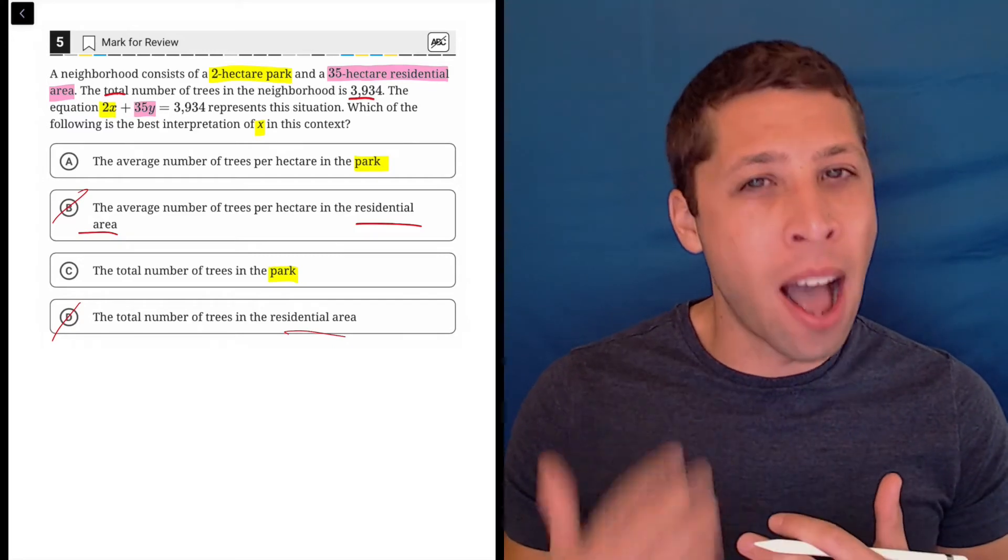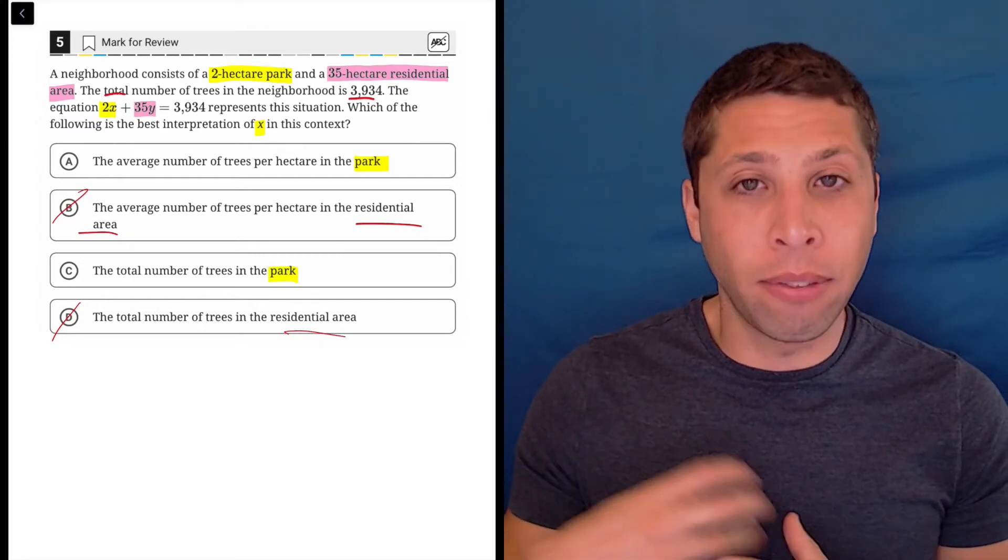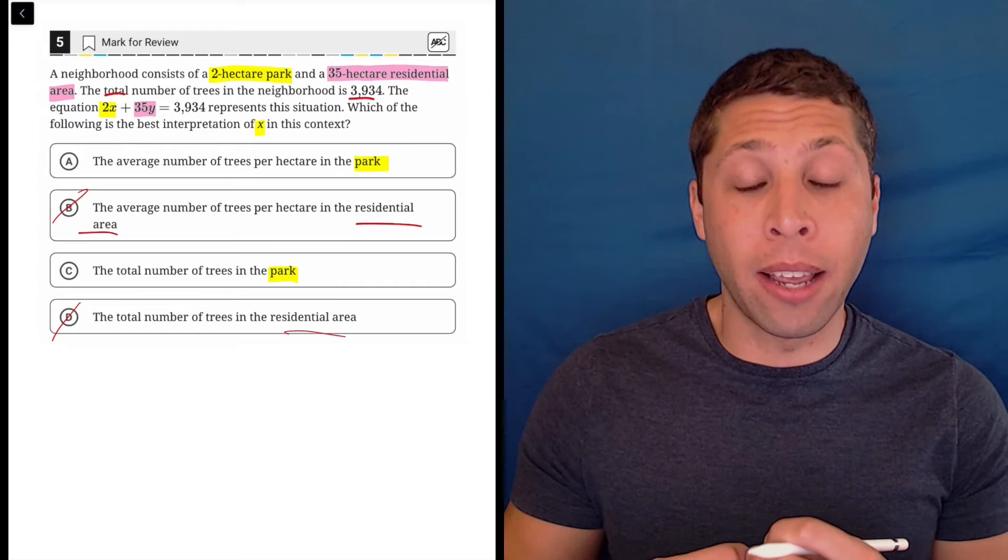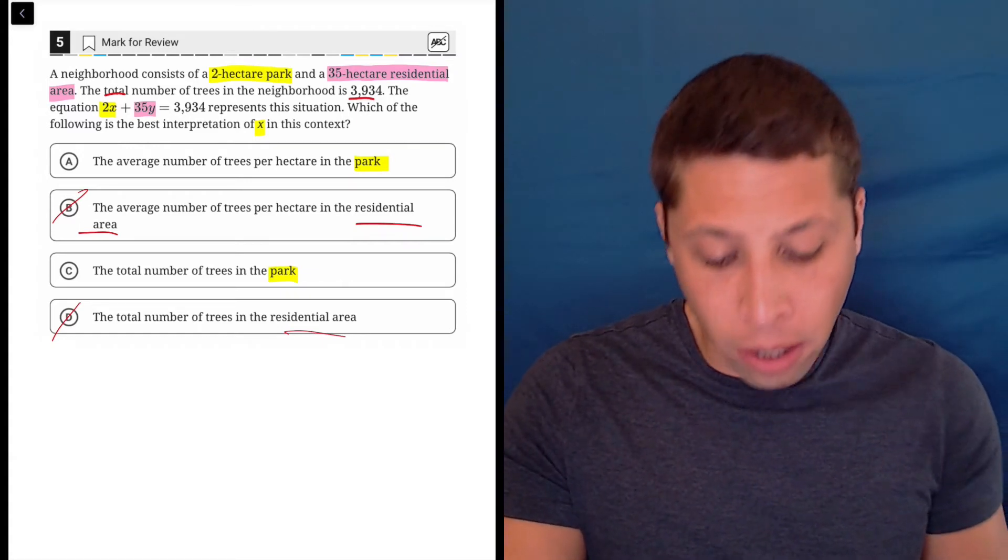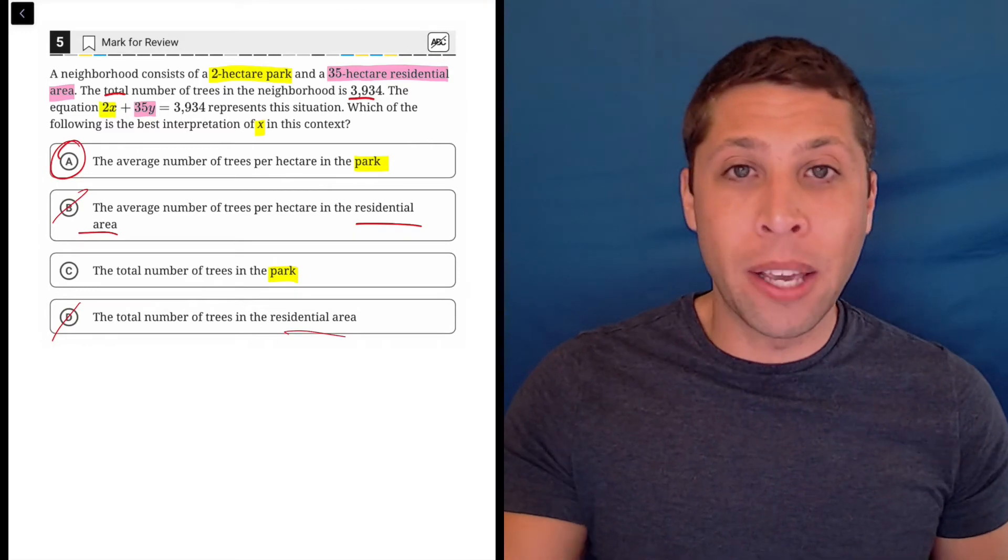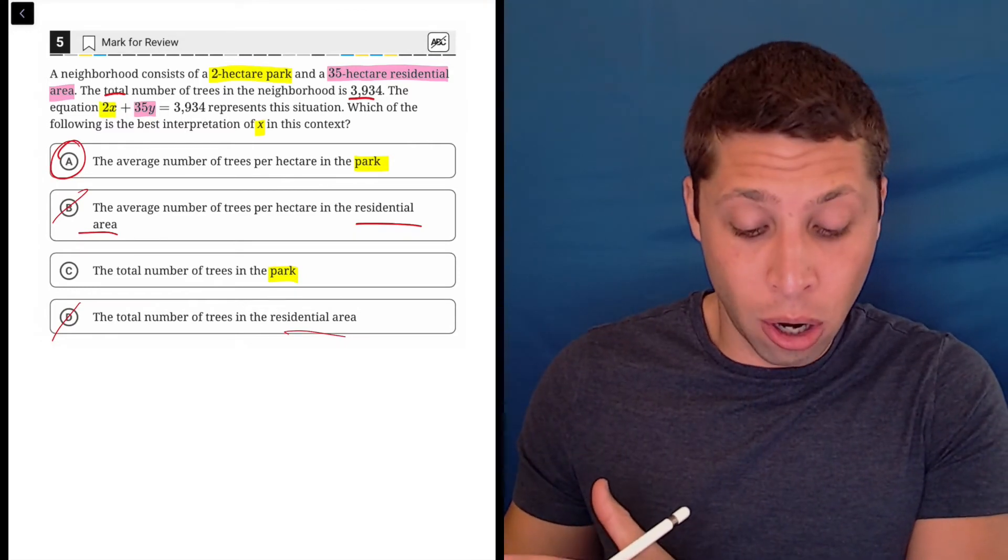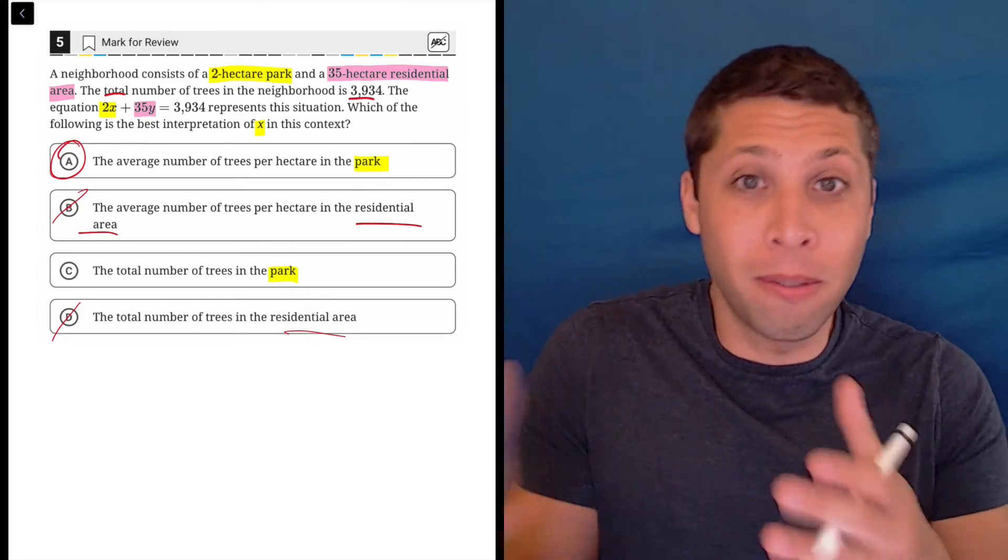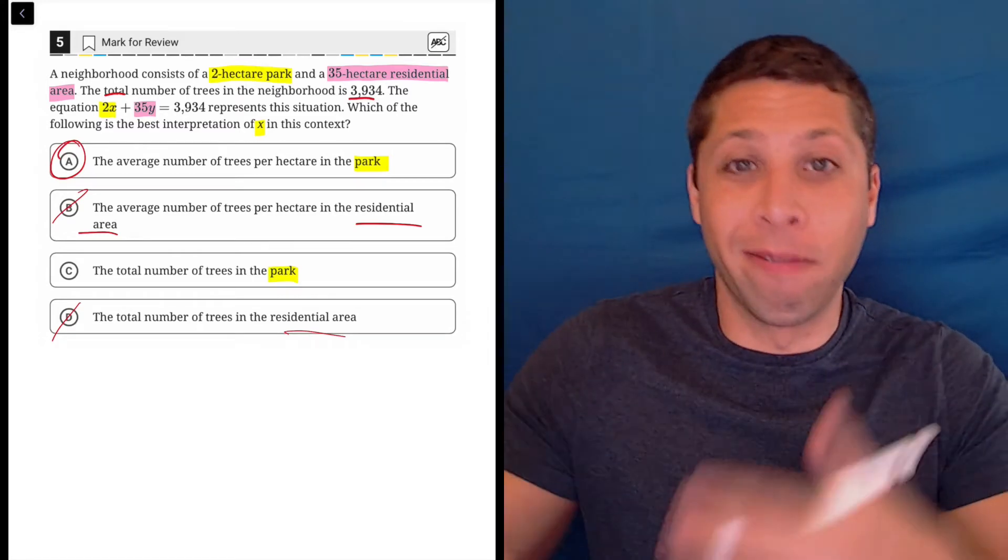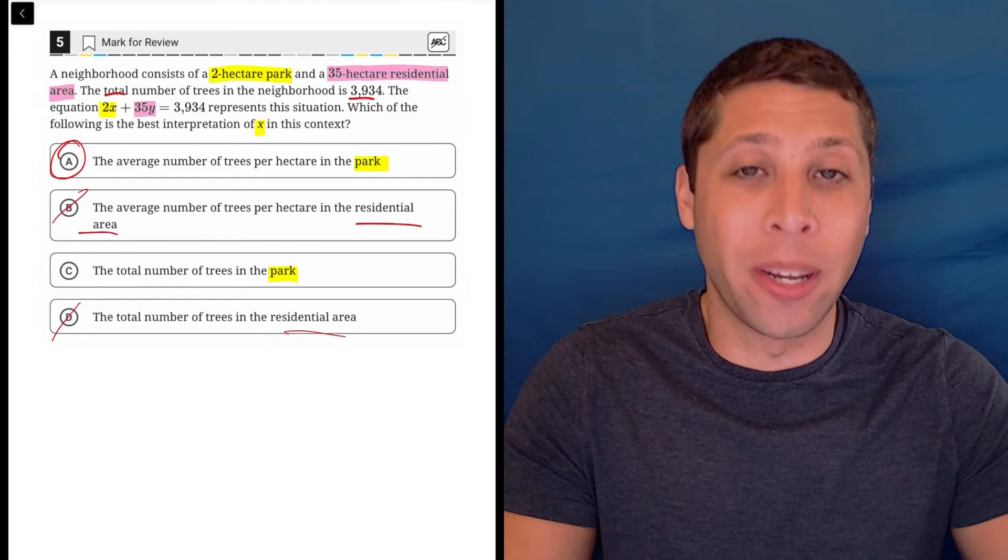So the x by itself is not that. The x is kind of behaving like a rate. The average number of trees per hectare in the park, because there's two hectares. So the reason we're multiplying by two is because we take that average and there's two hectares. So that's where we get our total from.